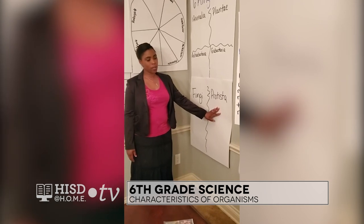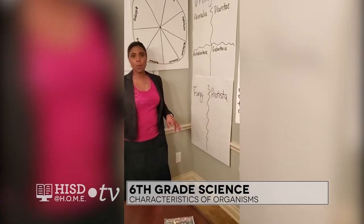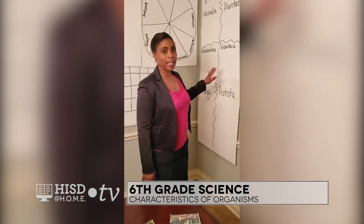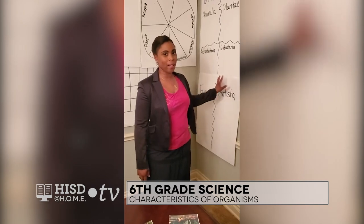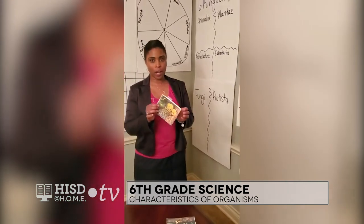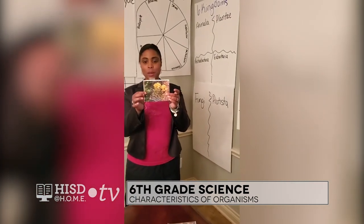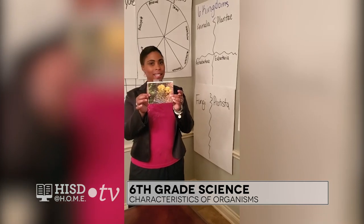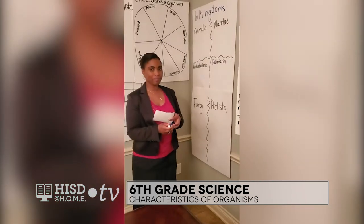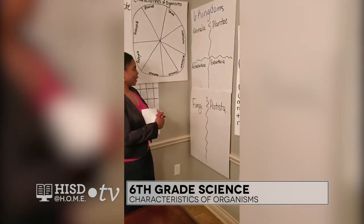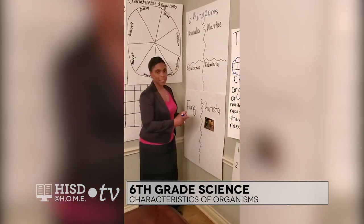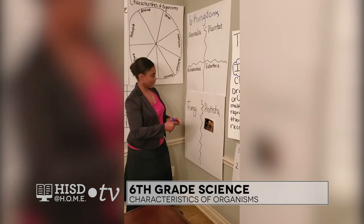Now the second question asks: what are some examples of each kingdom? We're going to dive into a card sort, and I know that you took good notes. The first picture in our card sort is a picture of slime mold, and it belongs to the protista. Do you have another example of a protista? Yes — amoeba.